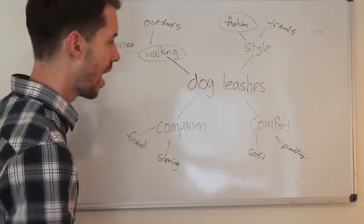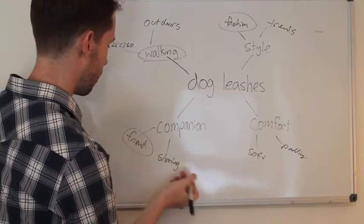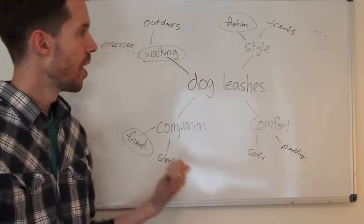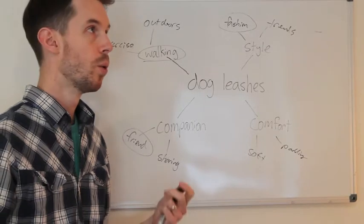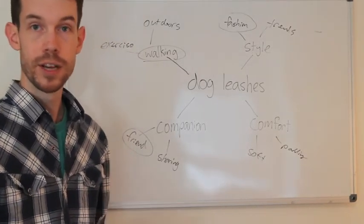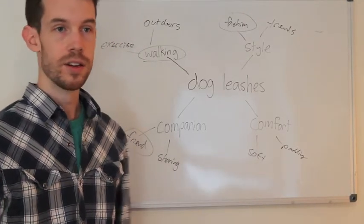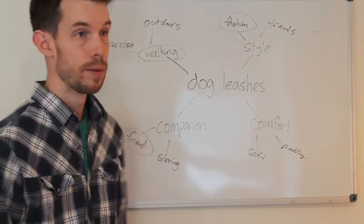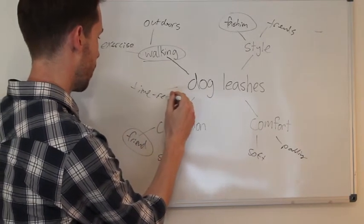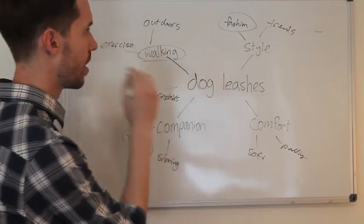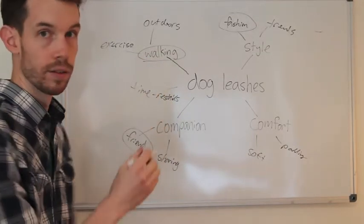Comfort is more of a — I don't know how I can build a lot of content around that. Companion, maybe — it's kind of a stretch. If you're having trouble with the mind map, you can start asking yourself some questions about your product: what problems does it solve, what types of people would be interested in it, what are they doing when they're using it, what's their mindset? When someone's walking their dog, maybe they're in a rush — maybe time is a factor. You want to find something broad but definitely related. I'm going to stick with walking for this exercise.